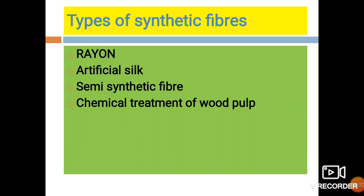The first type of synthetic fiber is rayon, also called artificial silk. Natural silk is obtained from silkworms, but the production and maintenance of silk is very difficult and expensive. After many years of research, scientists succeeded in making artificial silk, that is, rayon.